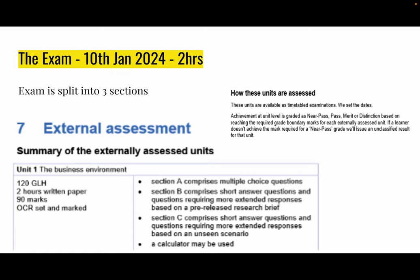This exam is graded near pass, pass, merit, or distinction. We don't see the distinction star as a grade for this exam itself — you are able to achieve a distinction star once you have completed this exam and your coursework units. The points are added up and if you have enough, that's where the distinction star grading comes in.